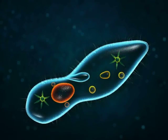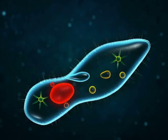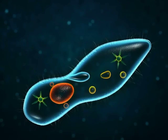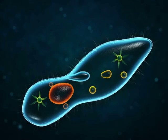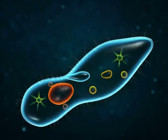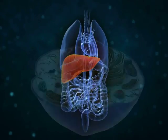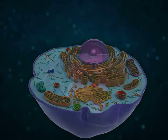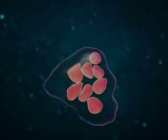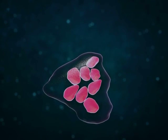Cells which contain two nuclei are known as binucleate cells. Binucleate cells occur in certain protozoa such as Paramecium, and in cells of cartilage and liver. Cells which contain many nuclei — from three to a hundred — are known as polynucleate cells.